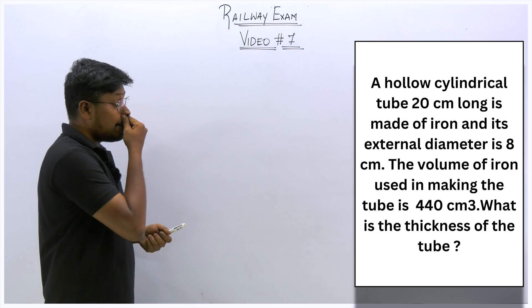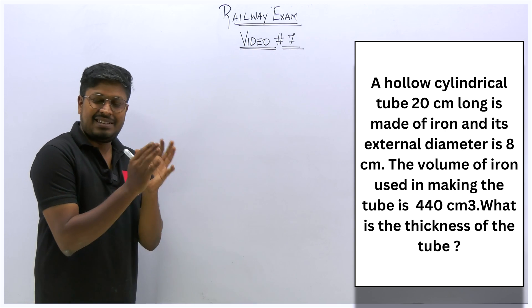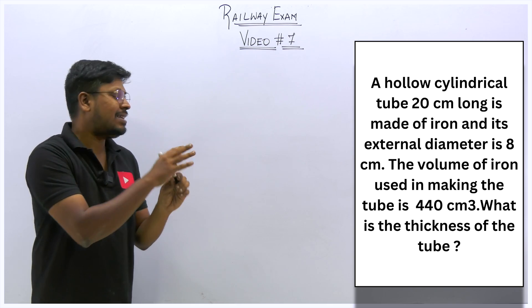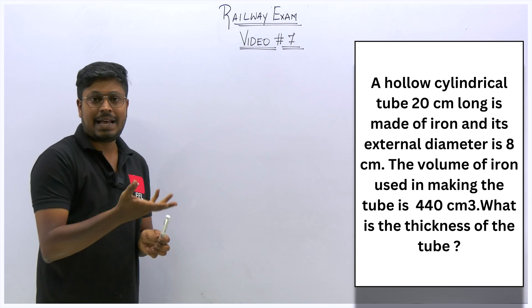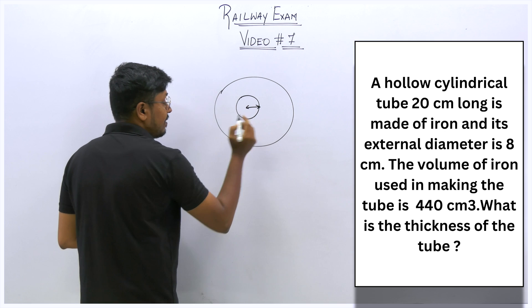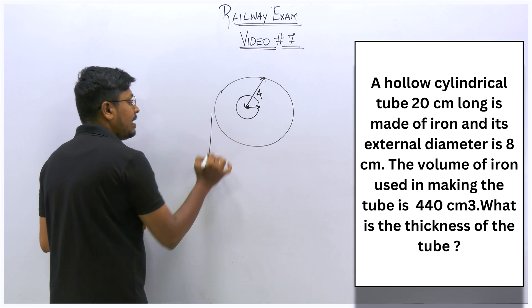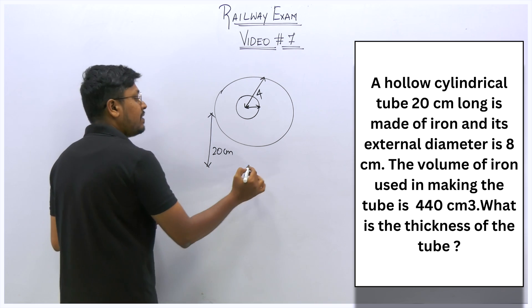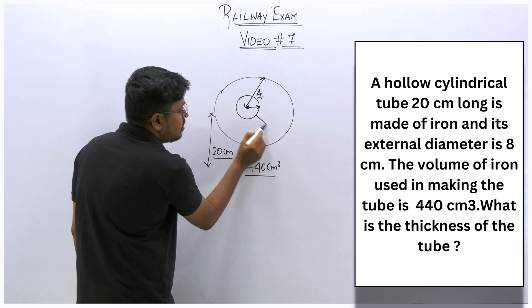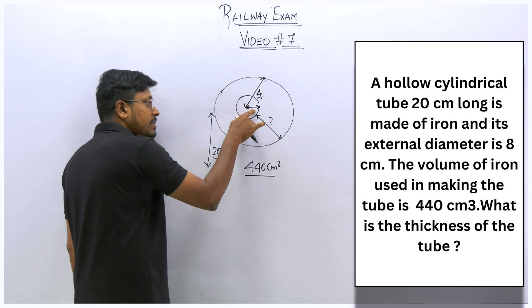Question 2: A hollow cylinder tube 20 cm long is made of iron. Its external diameter is 8 cm and the volume of iron used is 440 cm³. Find the thickness of the tube. Here only the external diameter is given — external radius = 4. The length is 20 cm and volume is 440 cm³. The internal radius is not given, so we need to find it first using the volume formula, and then calculate thickness.